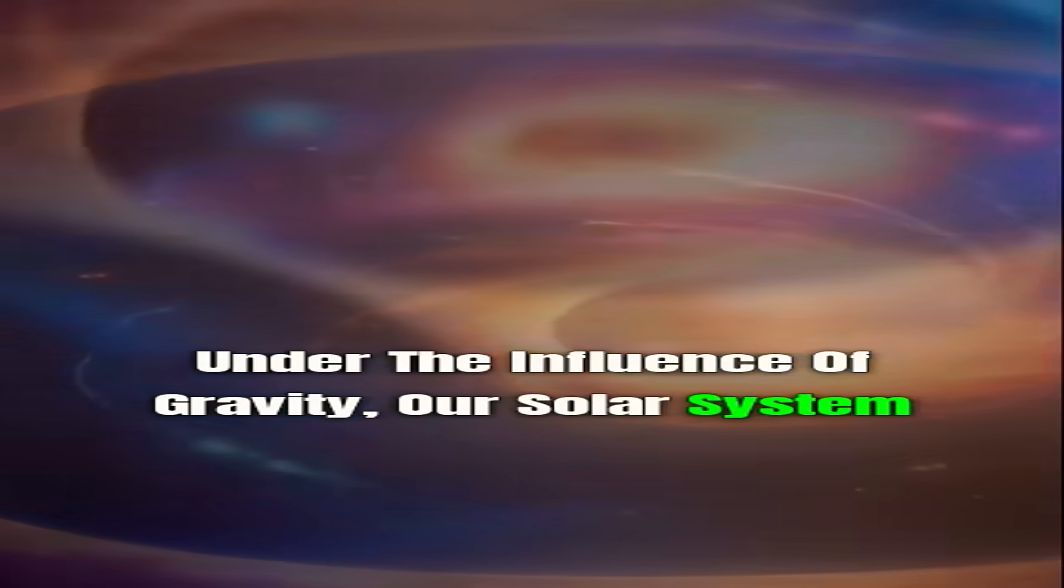Our solar system, including Earth, formed around 4.6 billion years ago from a giant cloud of gas and dust.